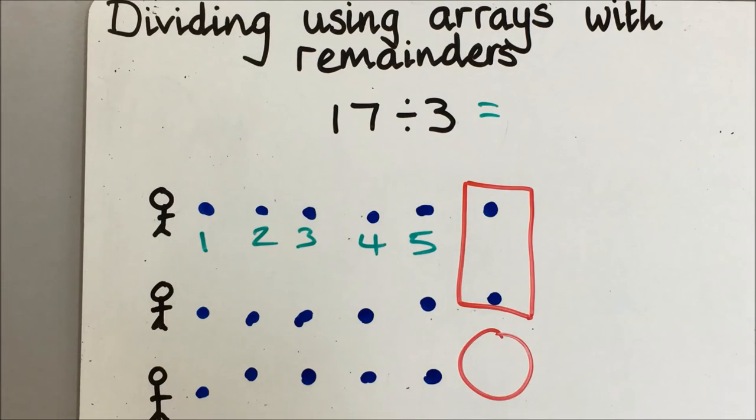But there are two left over because this one doesn't get one. So our answer is 5 with the remainder of 2.